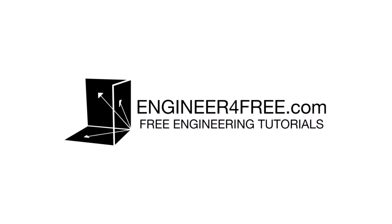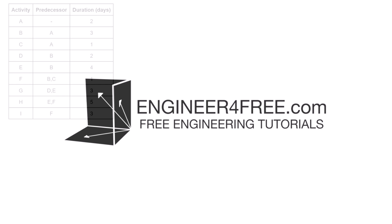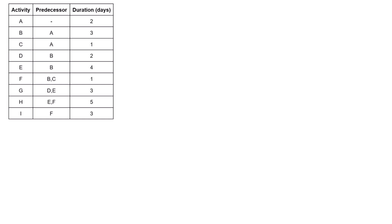Hey guys, welcome back. In this video, we are going to be drawing the network diagram of a project and determining the critical path. In this case, it's a project that has multiple terminal activities or finishing activities. There are a couple of activities in here that don't have anything that comes after them. It's not apparent from the table of dependencies just yet, but we'll see what happens when we get into the network diagram.